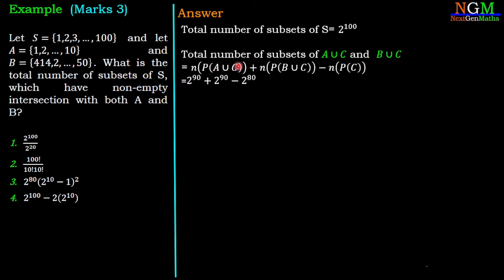So A union C contains a total of 90 elements, therefore the power set of A union C contains 2^90. B union C contains 90 elements, therefore the power set of B union C also contains 2^90 elements. And C contains 80 elements, therefore the power set of C contains 2^80 elements. Then we have 2 times 2^90 minus 2^80.